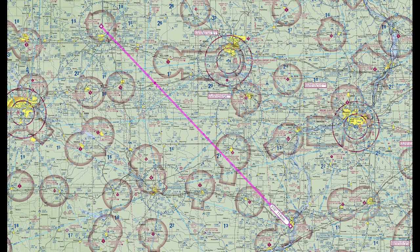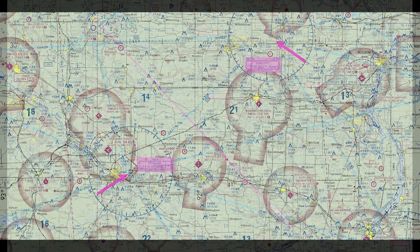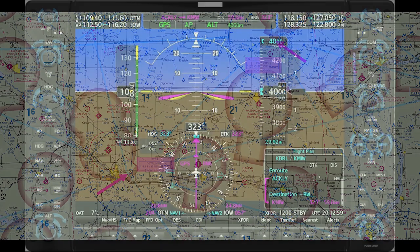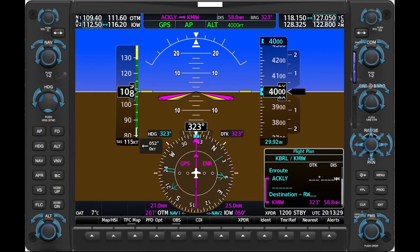Let's begin with an overview of how bearing pointers present information. Assume you're flying on a direct GPS route from Burlington, Iowa, northwest to Marshalltown, Iowa. To help you track your progress along the magenta line, you tune the Ottumwa and Iowa City VORs into NAV1 and NAV2, and set the bearing pointers to those NAVAIDs, which lie either side of your course. As its name implies, a bearing pointer always points to a NAVAID or fix.